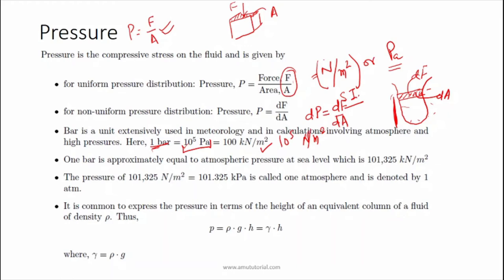1 bar is the atmospheric pressure at sea level, which is equal to 101325 Newton per meter square.